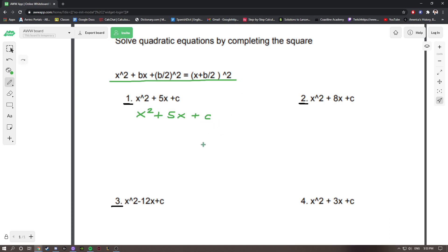It could be 1, 2, 3, 4, 100. But the constant basically means that it's not the coefficient of x. It's not next to anything. So, what this tells us up here is, x squared plus bx plus b divided by 2, that whole thing squared is equal to x plus b over 2, the quantity squared.